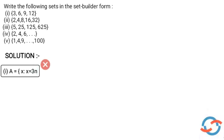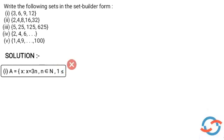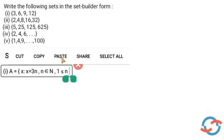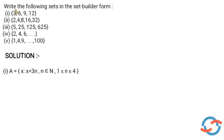So we write x = 3n. The next property is that n is a natural number, so n belongs to capital N, where capital N denotes the natural numbers. Since 3×1=3, 3×2=6, 3×3=9, 3×4=12, n ranges from 1 to 4. So the answer is: A = {x : x = 3n, n ∈ N, 1 ≤ n ≤ 4}. This is the answer to the first question.